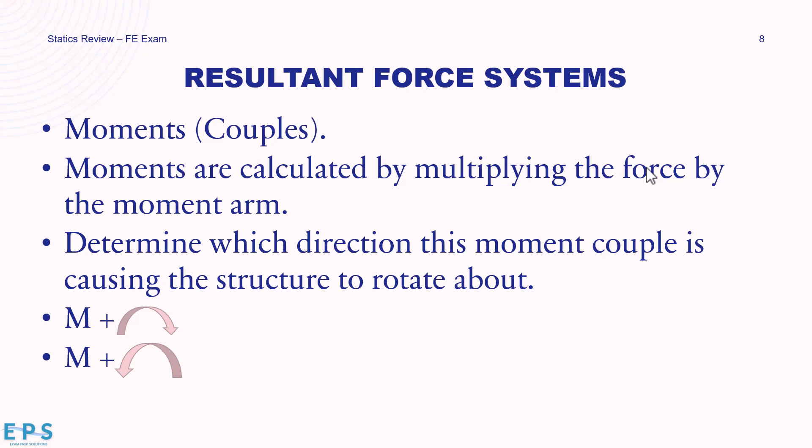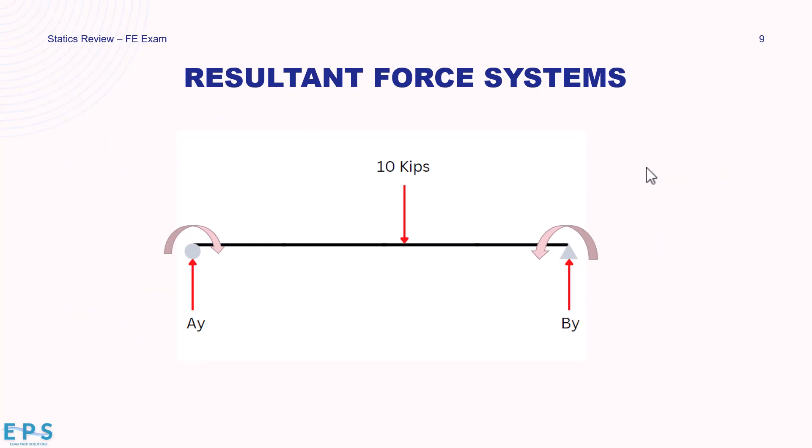For moments, it depends on which direction the structure rotates due to the force. Imagine balancing a ruler on your finger — if you apply a force on the right side, it causes clockwise rotation; on the left side, counterclockwise. You choose one as positive and the other as negative. For example, with a 10-kip force at the center of a beam, taking moments about point A on the left, that force causes clockwise rotation — so clockwise is our positive direction.